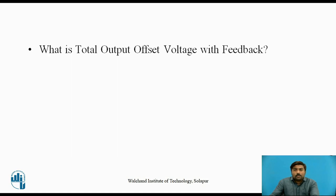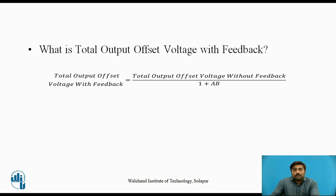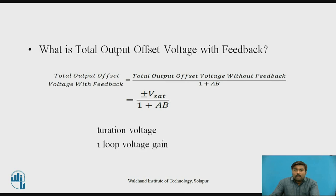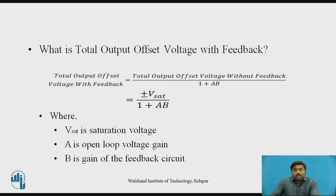Before starting the actual session, let's recall the total output offset voltage with feedback of the op-amp. It equals the total output offset voltage without feedback divided by (1 + AB), which equals plus or minus Vsat divided by (1 + AB), where Vsat is the saturation voltage, A is the open-loop voltage gain, and B is the gain of the feedback circuit.